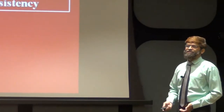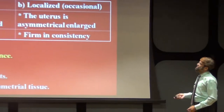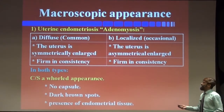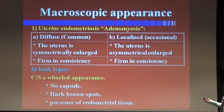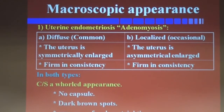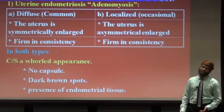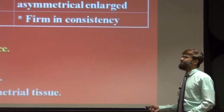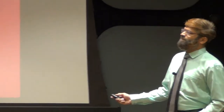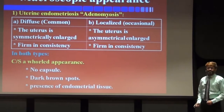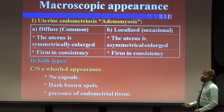Next is the macroscopic appearance of endometriosis, especially uterine endometriosis — that is adenomyosis or endometriosis interna. Endometriosis internal is of two types: first is the diffuse type, which is more common, and second is the localized type, which is occasional.